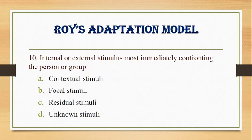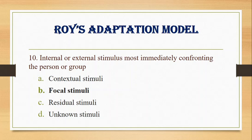Number 10. The internal or external stimulus most immediately confronting the person or group is: A. Contextual stimuli, B. Focal stimuli, C. Residual stimuli, D. Unknown stimuli. Answer: B. Focal stimuli. The most immediate stimulus confronting a person is focal stimuli.